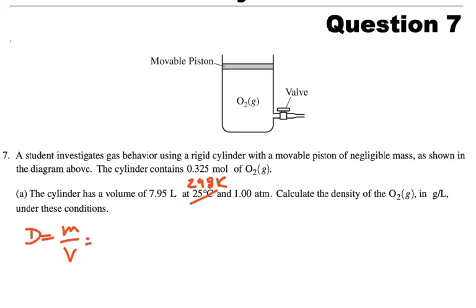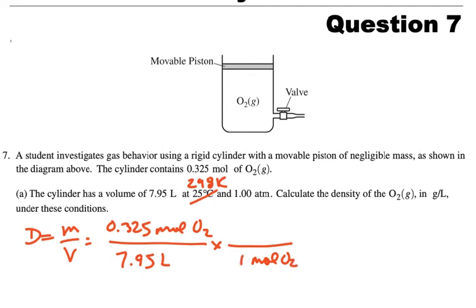So I know that I have 0.325 moles of oxygen. And that's going to be in a total volume of 7.95 liters. And I don't want moles per liter. I want grams per liter. But I know I can change moles into O2. So I look it up on the periodic table. It's 16.00, so 32.00 grams of oxygen. So if I do my calculation, I will get 1.31 grams per liter.